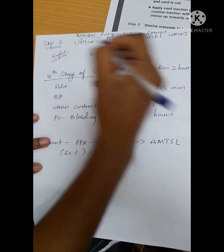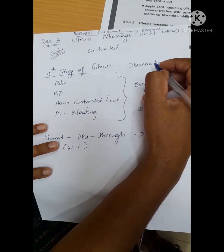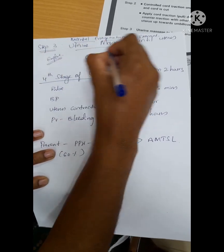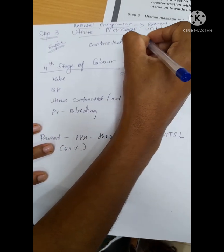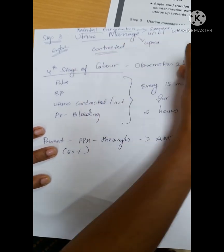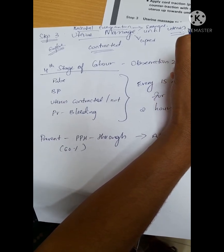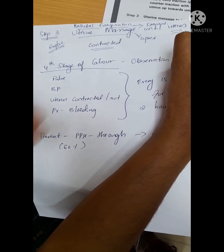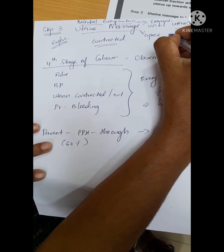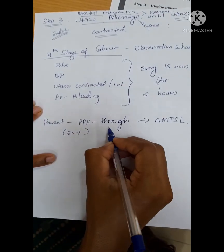Then you have to explore the uterine cavity once to see if all the products of conception have come out. Then third step is very important: uterine massage. Uterine massage with the help of cupped hands should be done until the uterus gets contracted, until the uterus feels like a hard cricket ball. We should massage the uterus with one cupped hand.